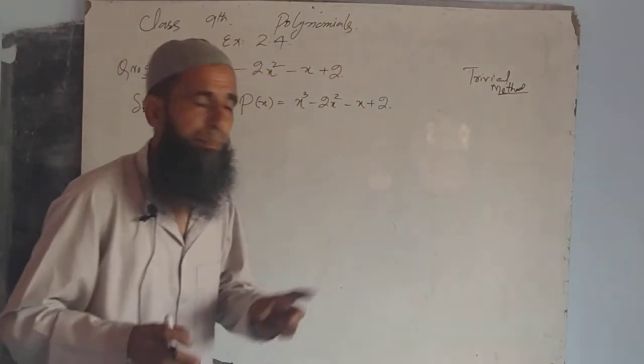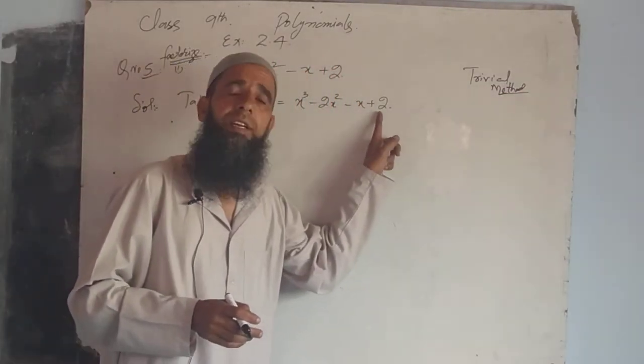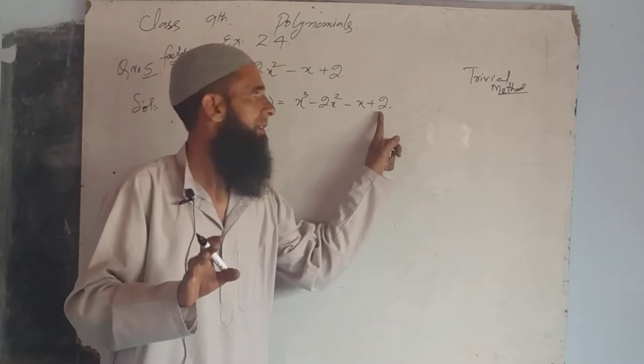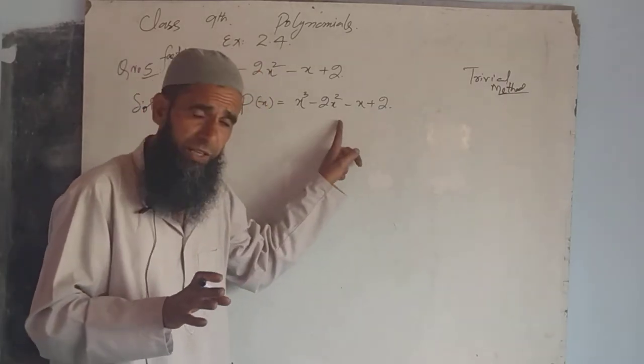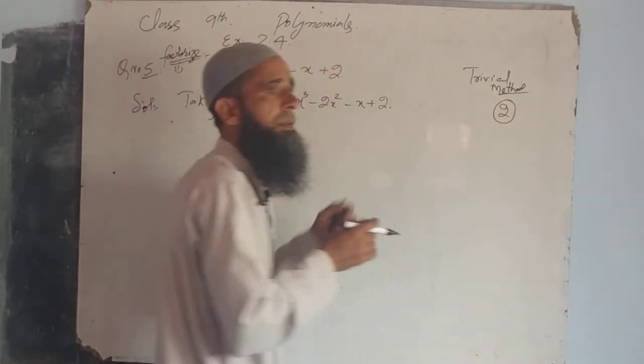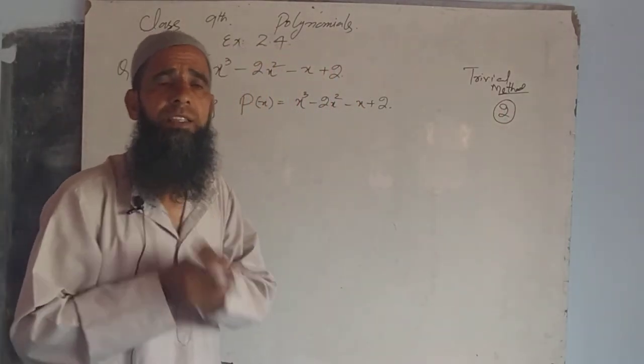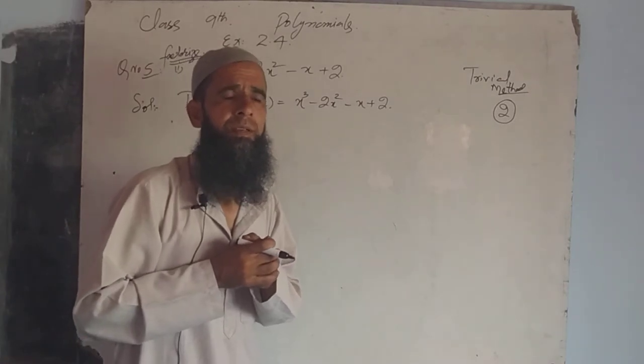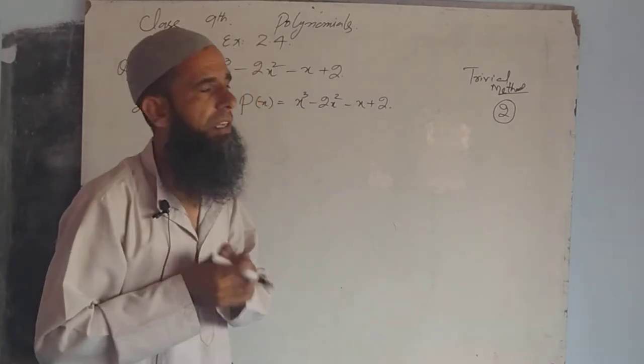What do we do here? We look at the constant term. In this question, our constant term is 2. We look at the factors of two, whether positive factor or negative factor.